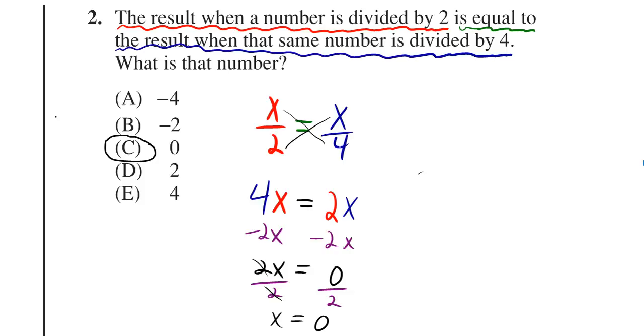I do this by cross multiplying, and that gives me 4x equals 2x. Then if I subtract 2x from both sides, I'll be able to combine my like terms, because 4x minus 2x will just give me 2x, and on the other side, I have to do minus 2x as well, and that will just give me 0. So if 2x equals 0,